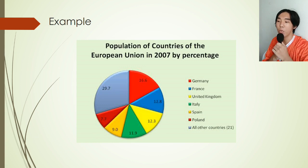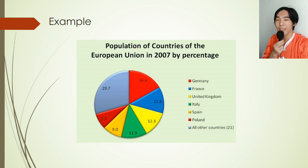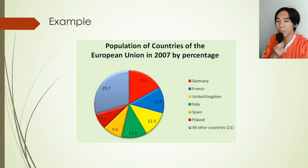It is commonly used for budgeting, like I said. And if we have plans we need to carry out, we can use the pie chart to manage our time — shortly, it is for time management purposes. And as we can see here from our illustrative example, from the population of countries of the European Union in 2007 by percentage, we can see the amount of population in just this simple pie chart.